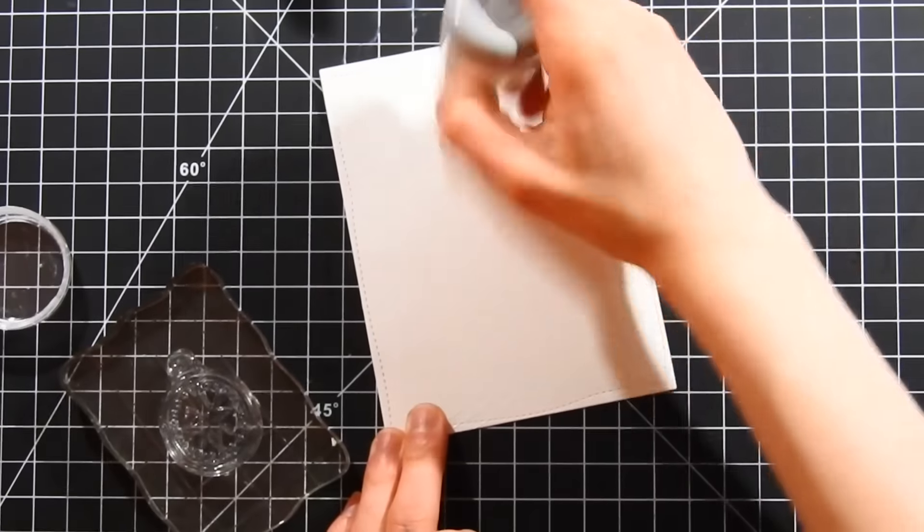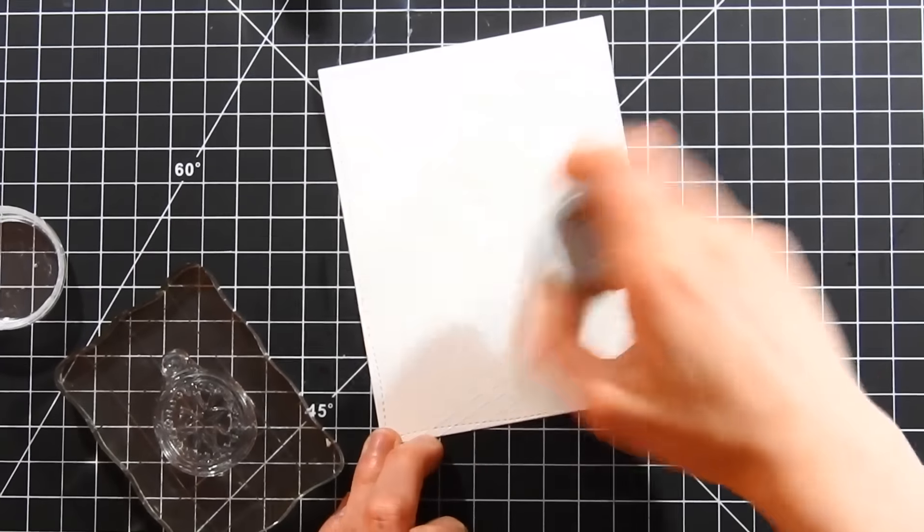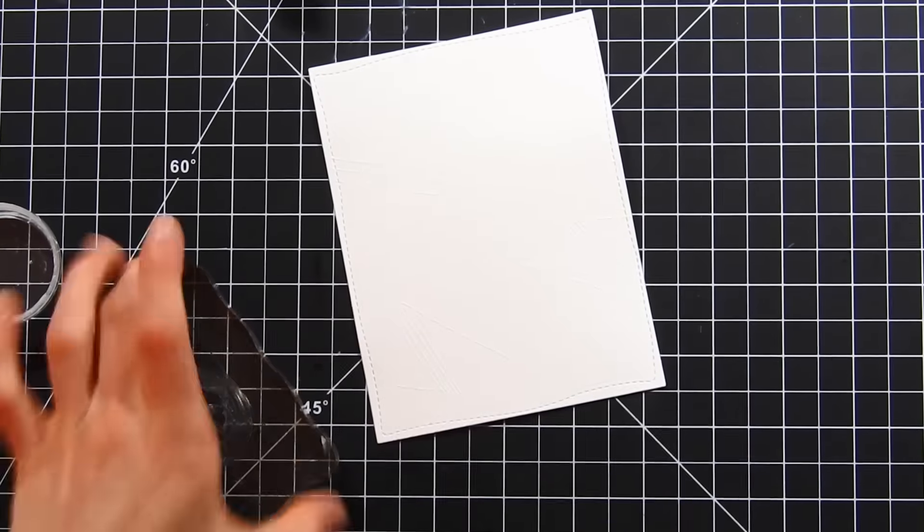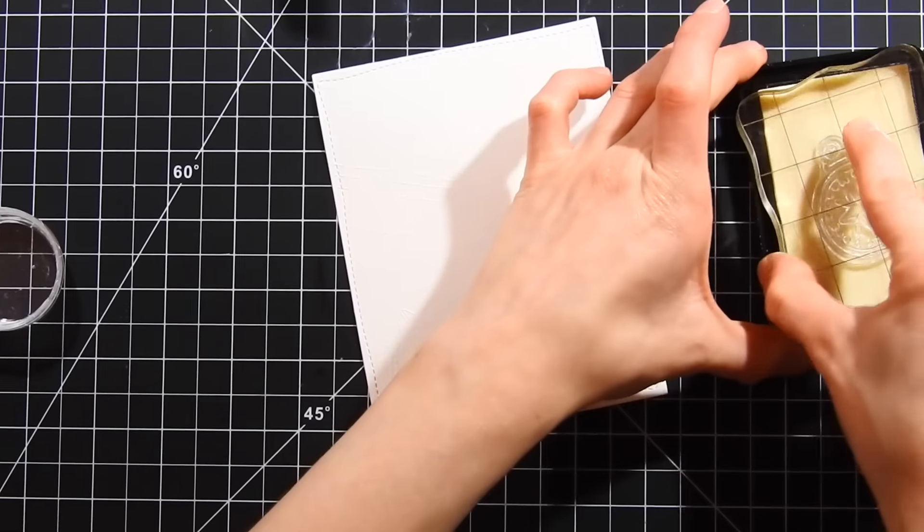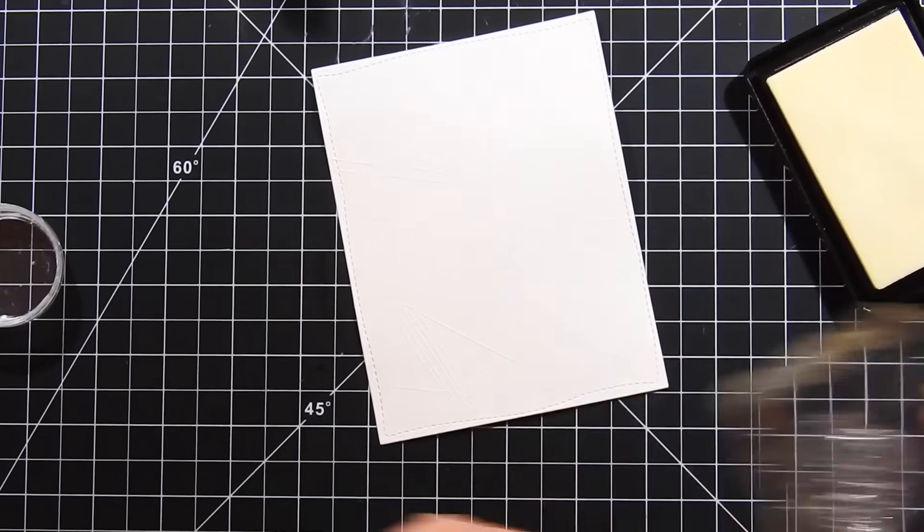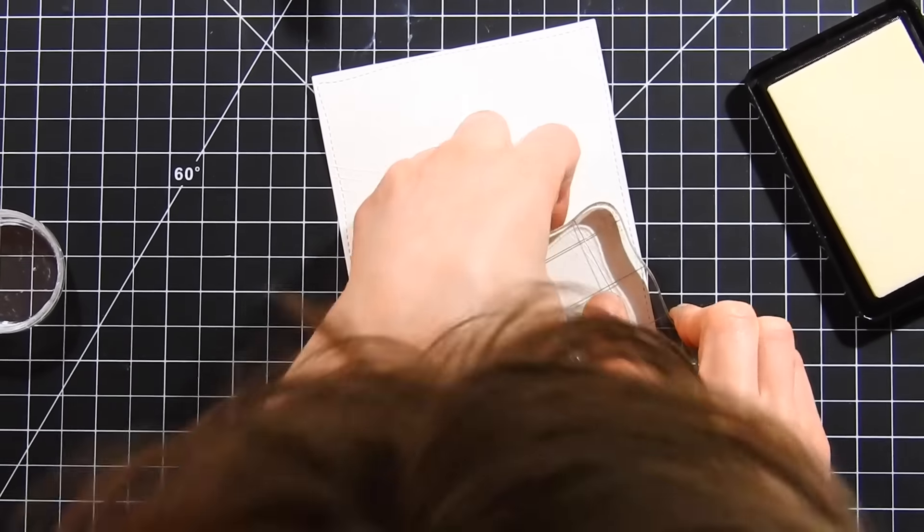Now I'm going to go ahead and heat set that, and I've added some more EK Success powder onto my paper because I'm gonna go ahead and keep stamping. I'm now taking the compass that's included in the Ocean Journey stamp set and I'll go ahead and stamp this down a couple times.